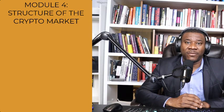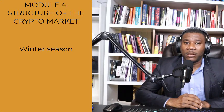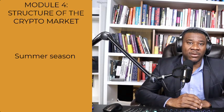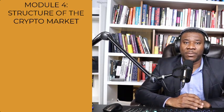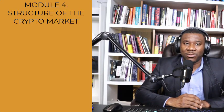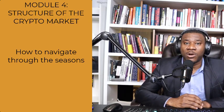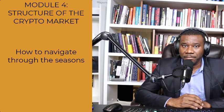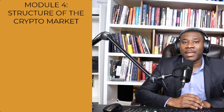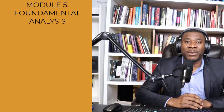On module four, you're going to learn about the structure of the crypto market — what are the cycles of the market and what are the seasons of the market. We have four seasons in the market: the winter season, the spring season, the summer season, and the fall season. We're going to talk about all four seasons, how to recognize them, how to manage when you're in those seasons, and what you should and shouldn't do based on the season you are in.